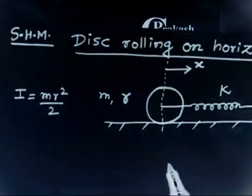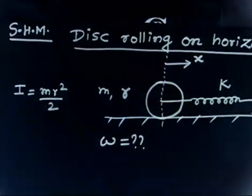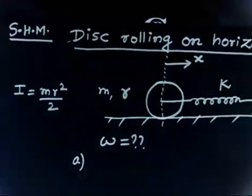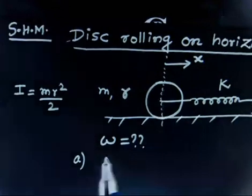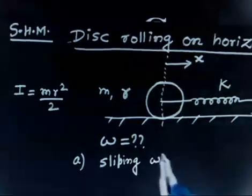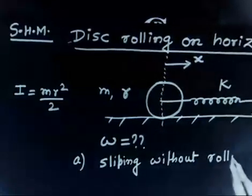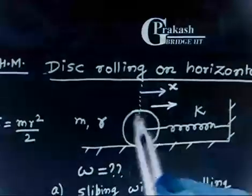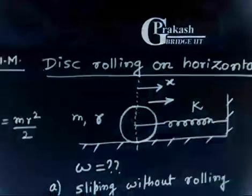So we have to find the time period. Now, first case: if this cylinder slips on the surface without rolling, so there is no rolling motion in this case. This cylinder is simply like a mass — there is no rotation, it is just moving horizontally.